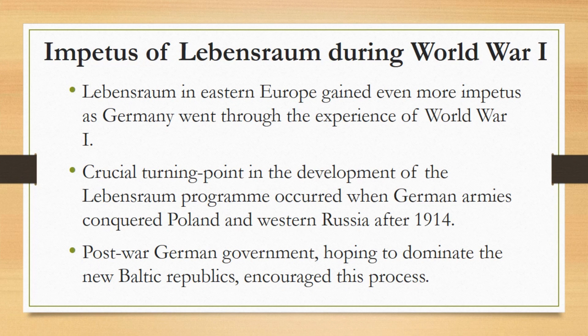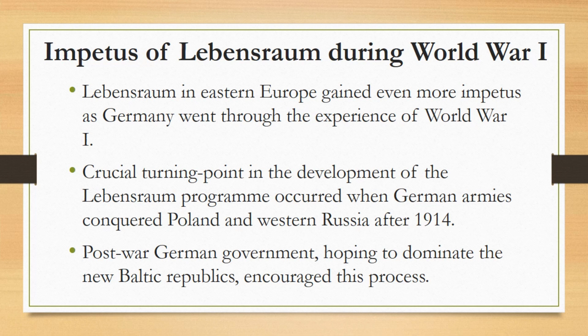The notion of acquiring Lebensraum in eastern Europe thus became quite a familiar one before the war, and it gained even more impetus as Germany went through the experience of World War One. The crucial turning point in the development of the Lebensraum program occurred when German armies conquered Poland and western Russia after 1914. A German military regime was established in the Baltic provinces and in part of White Russia under the command of General Erich Ludendorff. The situation became formalized with the Treaty of Brest-Litovsk, signed by the new Soviet regime in March 1918.